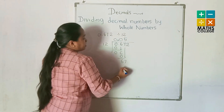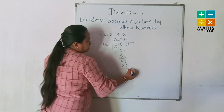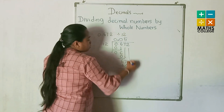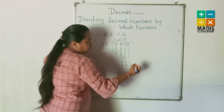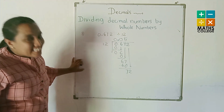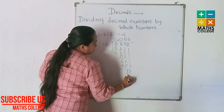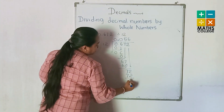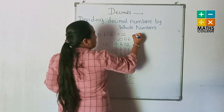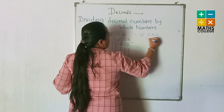Subtract 60 from 67 — 7 is remaining. Bring down the 2, making 72. How many 12s in 72? Six 12s. 6 multiplied by 12 is 72, remainder 0. The answer is 0.056.